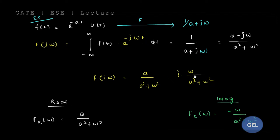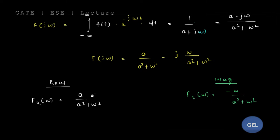This is where the GATE-level concept starts. The real component is a/(a² + ω²) and the imaginary component is −ω/(a² + ω²). So you can see the real and imaginary components of F(jω) = 1/(a + jω) clearly separated.